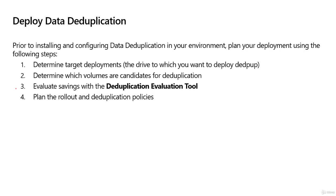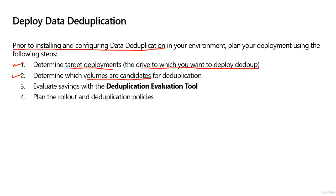The first thing we have to do is some planning. Prior to installing and configuring data dedupe, a few things we need to do. First, determine the target deployments — that's going to be the drive that you actually want to deploy data dedupe to. Then determine which volumes on the drive you believe would be a candidate for deduplication.